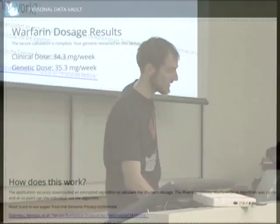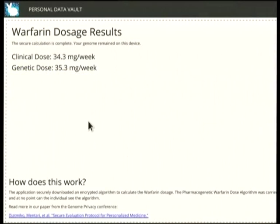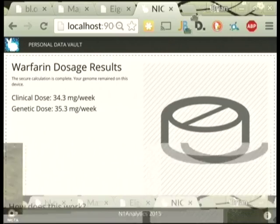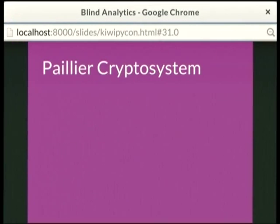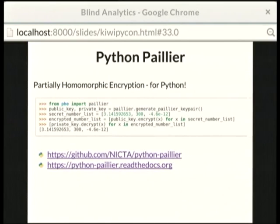I've got one library I'd like to share. If you're interested in looking at the Paillier cryptosystem, at NICTA we open sourced it: github.com/nicta/python-paillier — it's a partially homomorphic encryption system for Python. There's lots of docs on Read the Docs. It works, it's tested, you should try it. Things are possible.